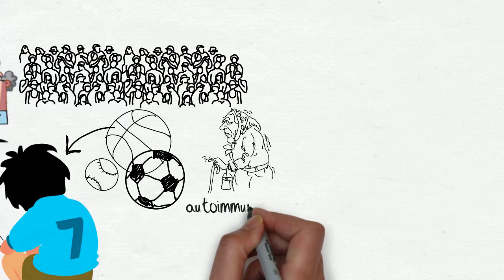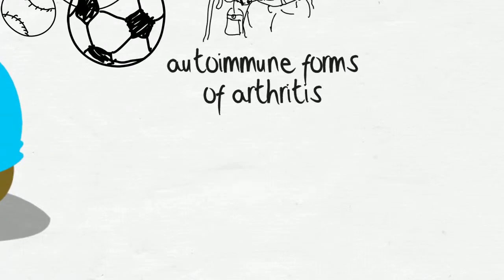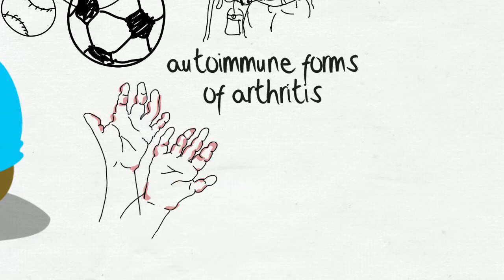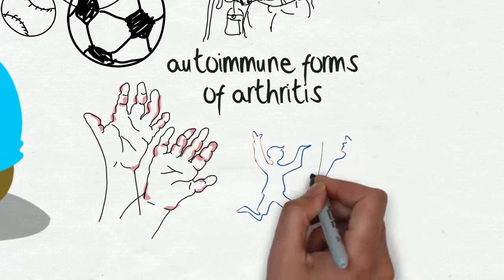They have autoimmune forms of arthritis that can cause severe pain, disfigurement, blindness, and physical limitations, robbing them of a normal childhood.